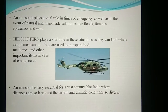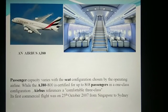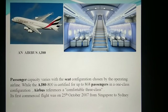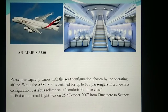This is the Airbus A380 — look at how beautiful it is. This is the inside picture. The Airbus A380 is the aeroplane used to travel with more than 800 passengers. It was first used on 25th October 2007 from Singapore to Sydney. It is a comfortable commercial flight certified for up to 868 passengers in a first-class configuration.